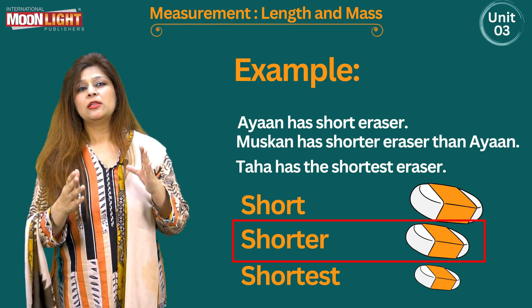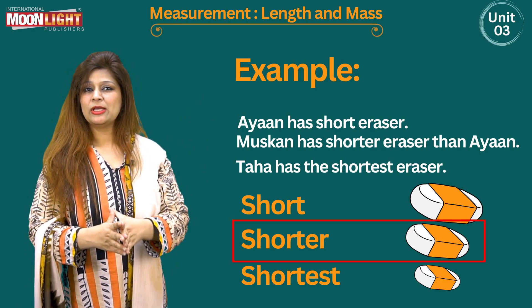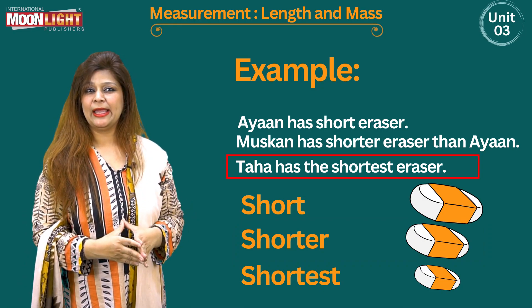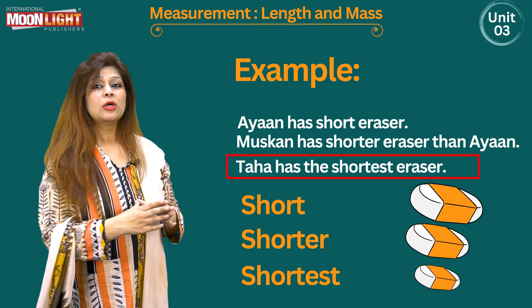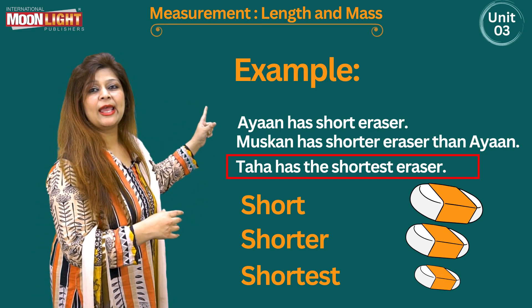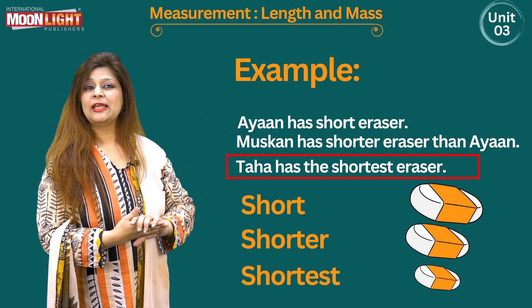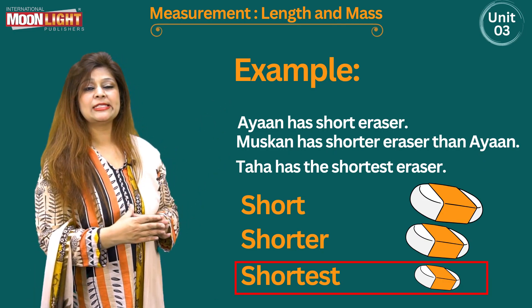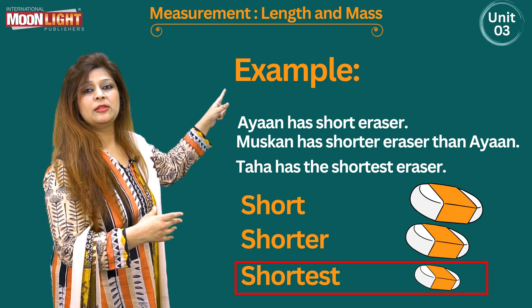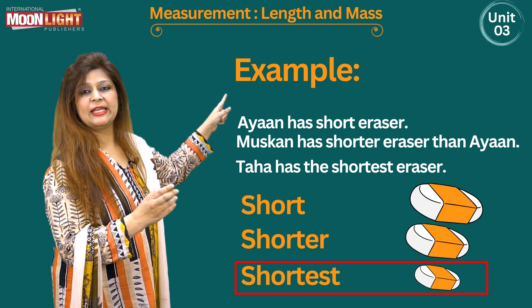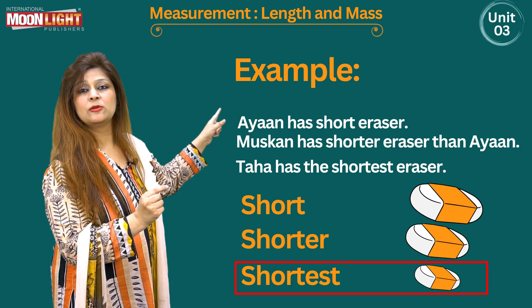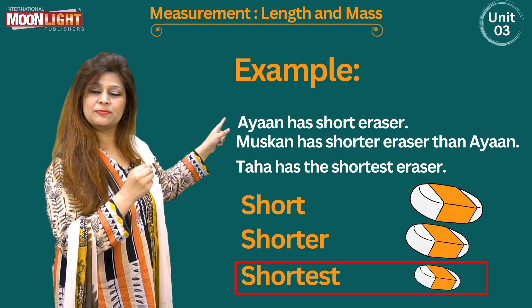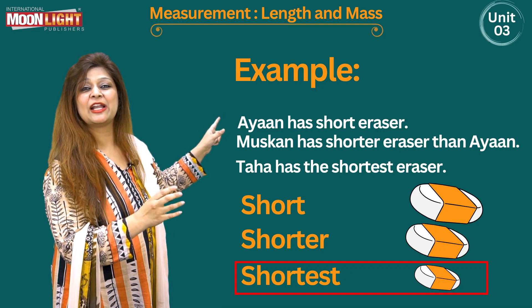Now the third eraser — because we have to compare three objects here, the same object. Taha has the shortest eraser compared to both of the given two objects. So the short one is bigger than that, then shorter, and the smallest one is shortest. Shortest is the smallest one.